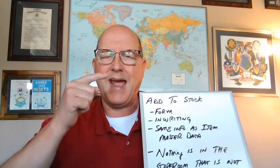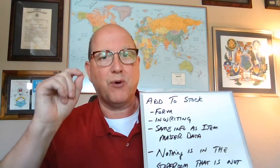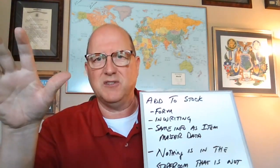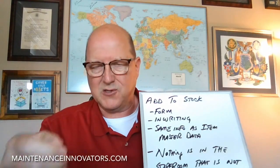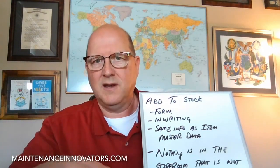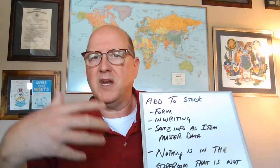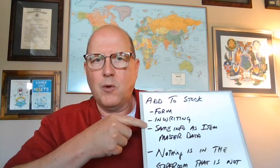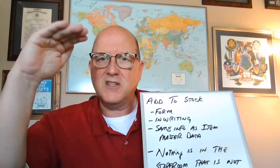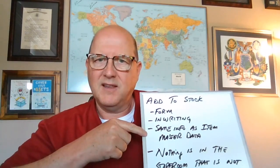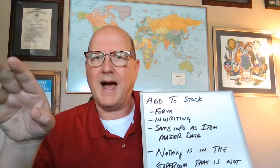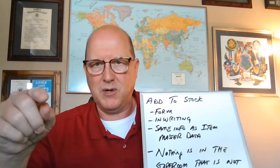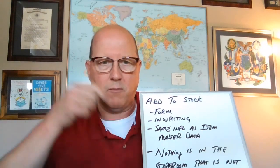Every request to add something to stock has to be done in writing. My recommendation: the person who hands the form to the storeroom is the maintenance planner. I'm not saying the planner fills out the form, but the planner is the liaison to the storeroom. I don't want everybody coming to the storeroom requesting to put stuff in stock — it's the planner that does it. The planner needs to know what's going on, needs to know what's in the storeroom. Every request is in writing, and the information on that form is the same information that's going to be typed in by the storeroom people into the item master data for that component. Whatever fields you have in your computer system, those are the fields that appear on this form.